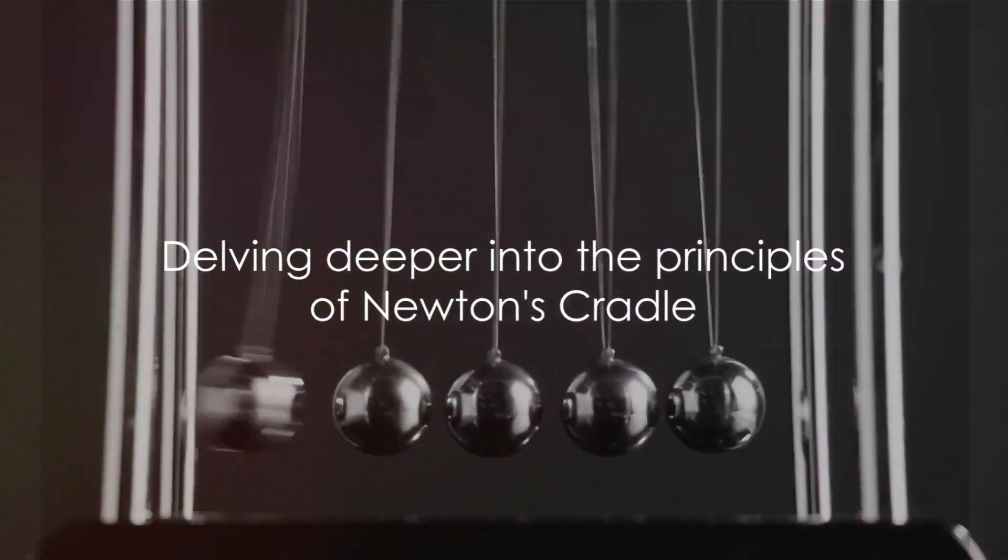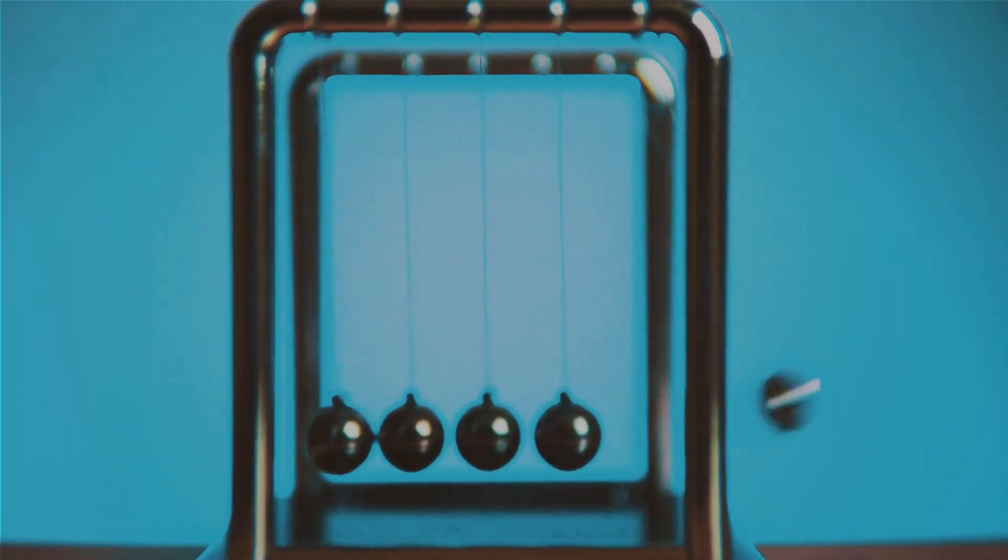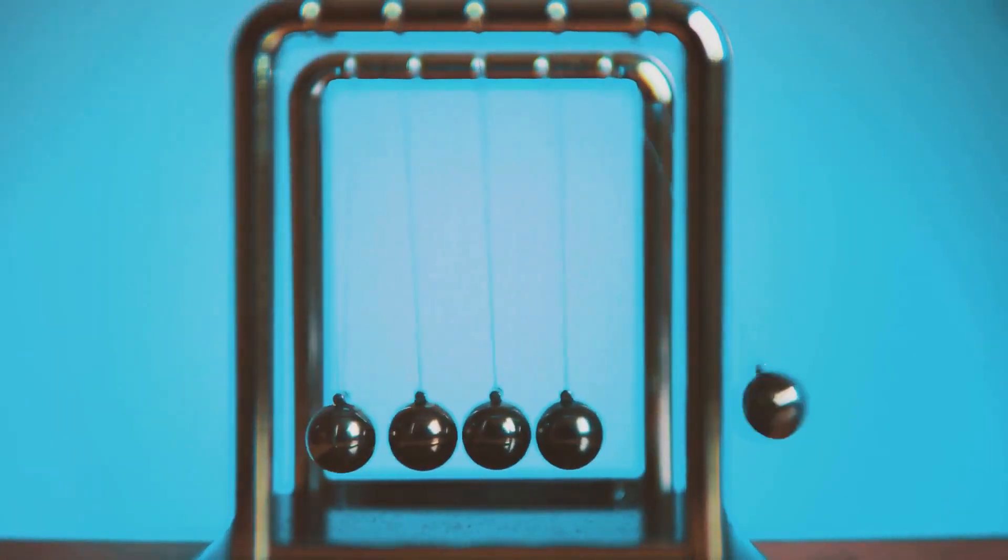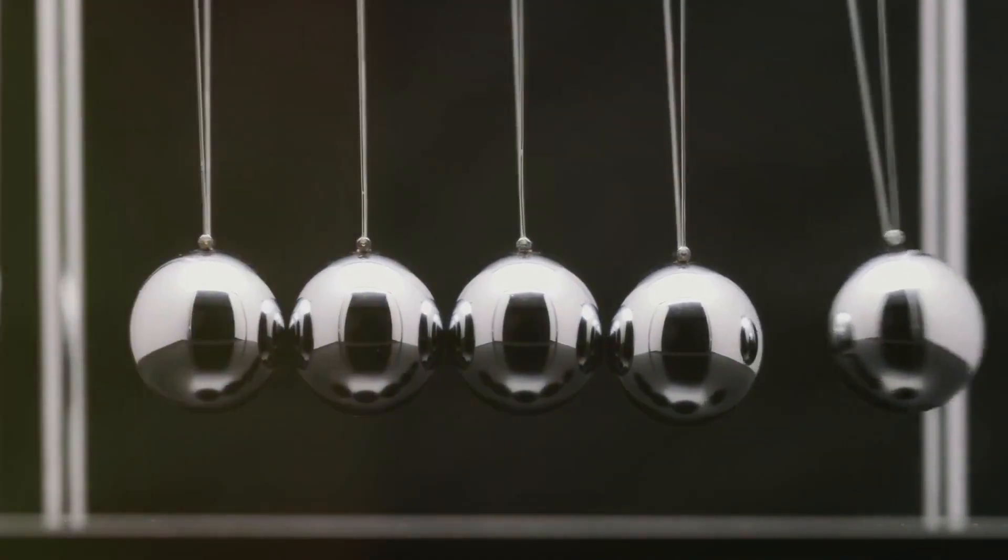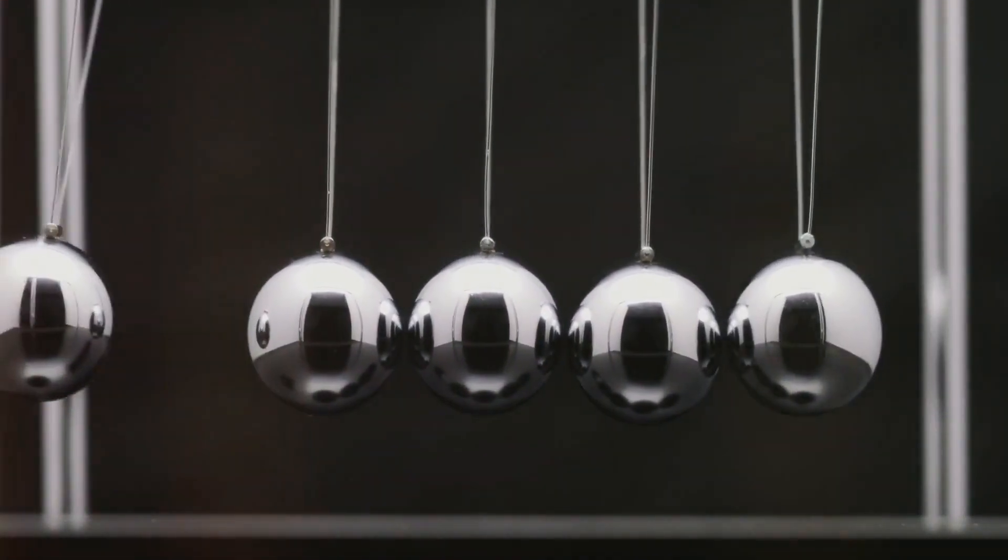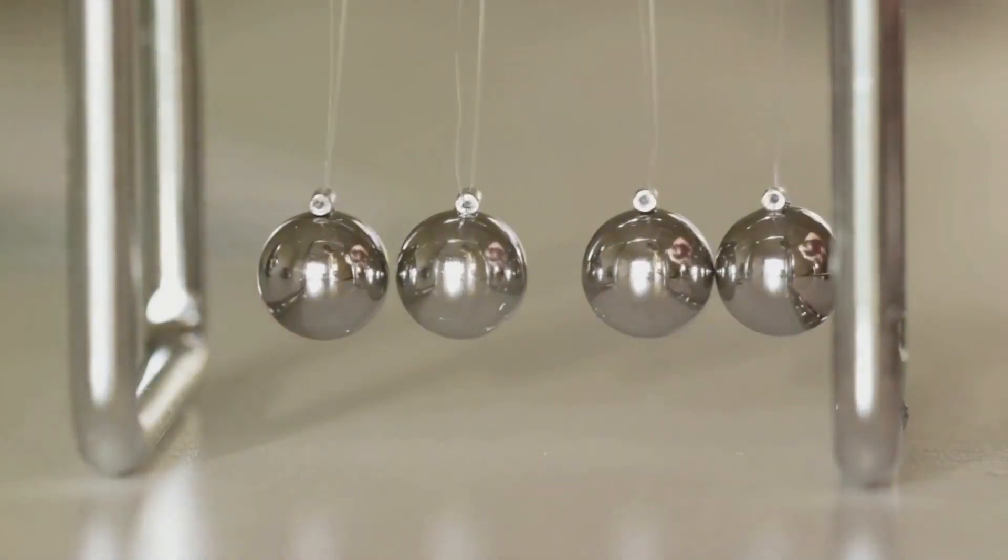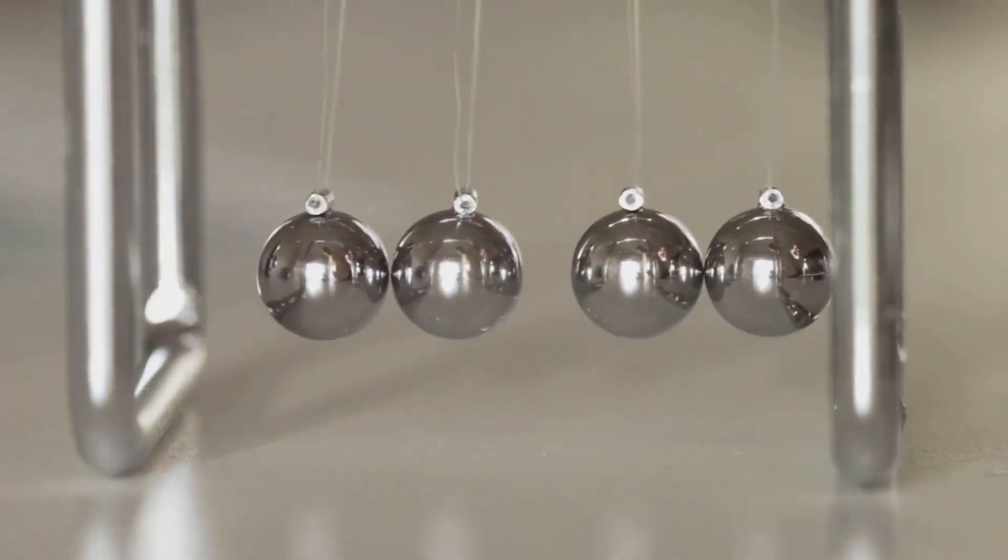Let's delve a bit deeper, shall we? When one ball on the end is lifted and released, it strikes the next ball in the line, setting off a chain reaction. The energy and momentum from the first ball are transferred through the stationary balls in the middle, and voila, the ball on the opposite end is sent into motion.